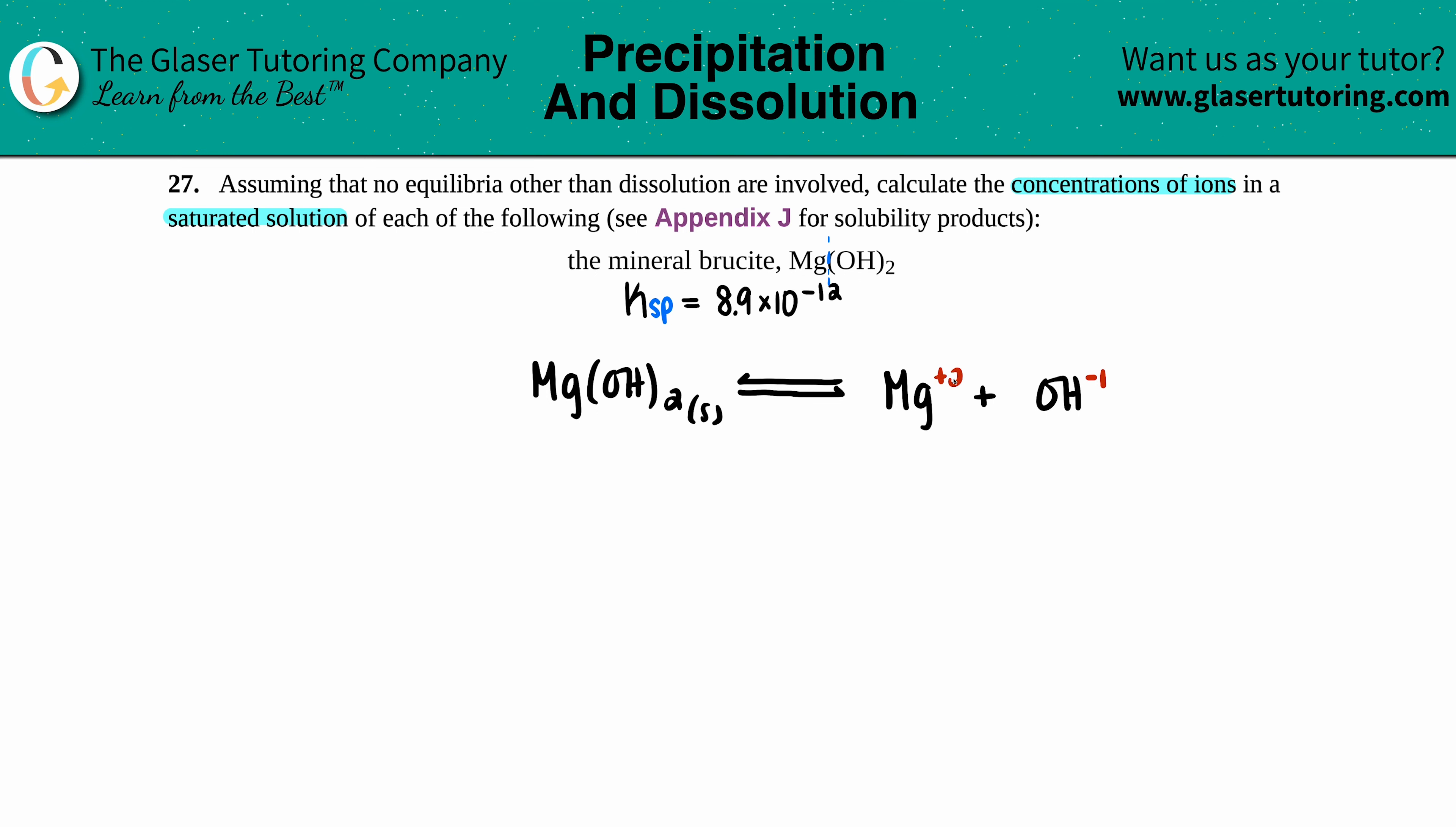Let's balance it. I see I had two hydroxides, so I did have to put a two in front of here. One magnesium is on both sides, and now we have charges, so they're aqueous.